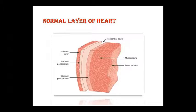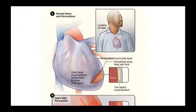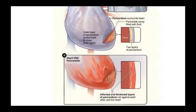The normal layers of the heart include the endocardium, myocardium, and pericardium. The pericardial cavity lies between the fibrous cap, parietal pericardium, and visceral pericardium. The outer pericardial layer can be pulled back to show the inner layer. In the pericardial cavity, fluid fills the space between the two layers. You can see the inflamed and thickened layer of pericardium.